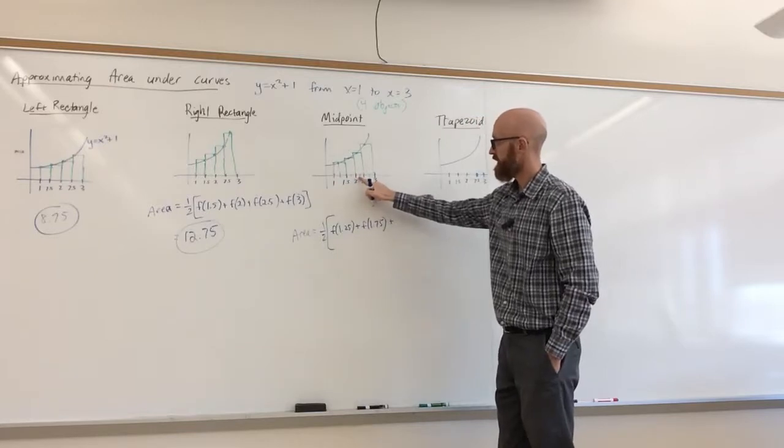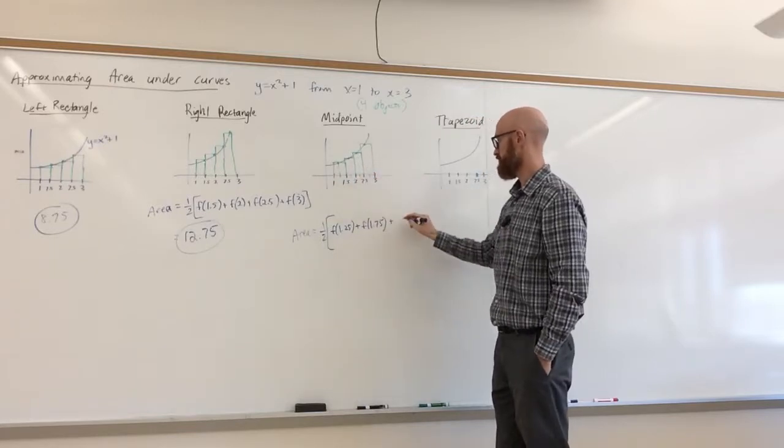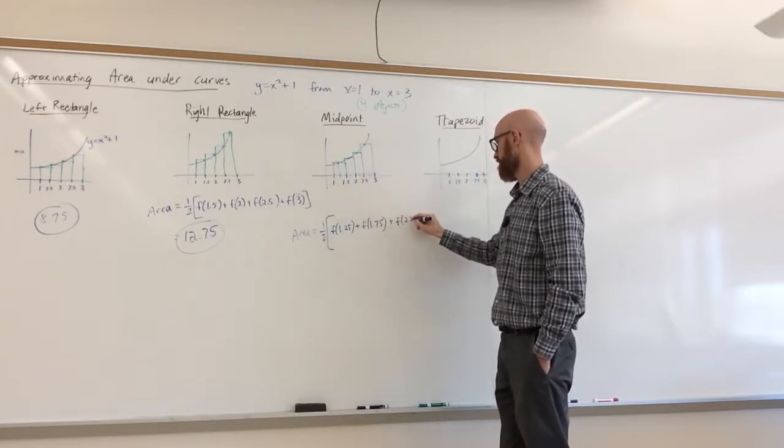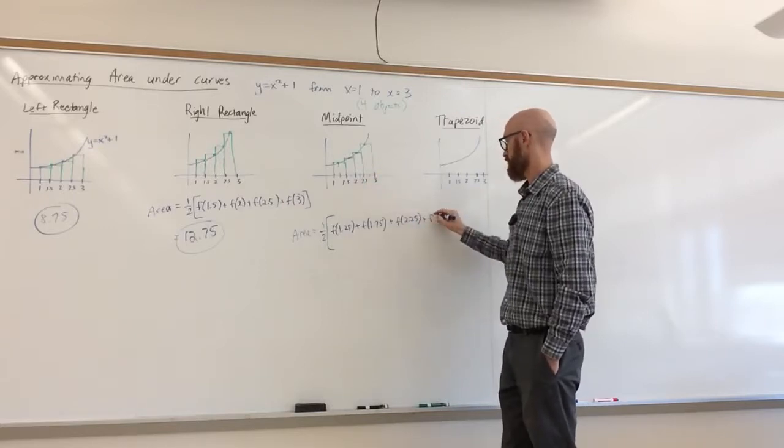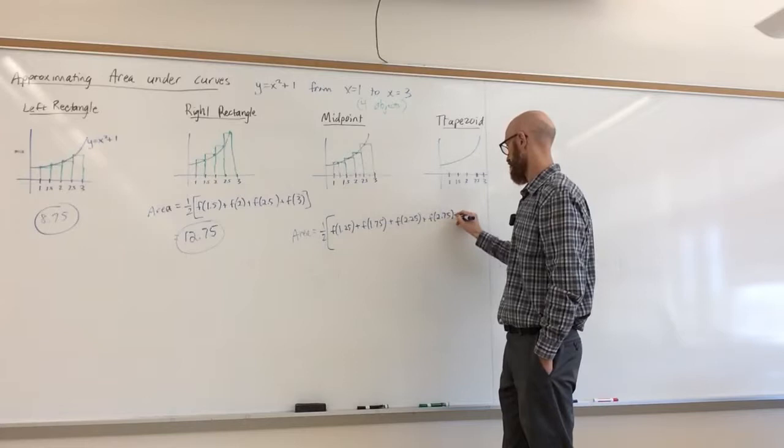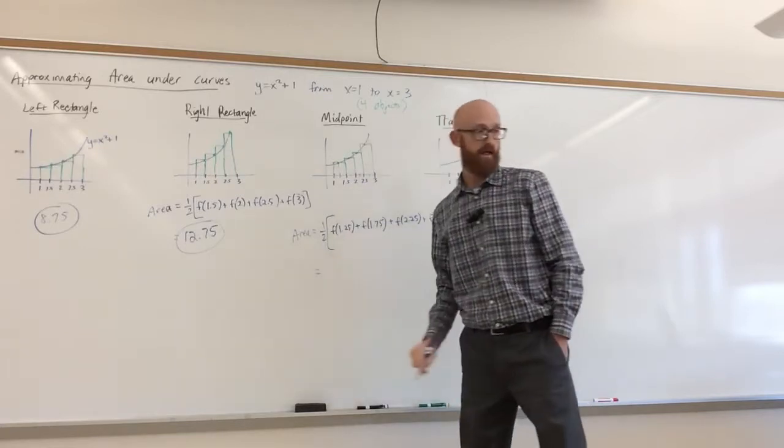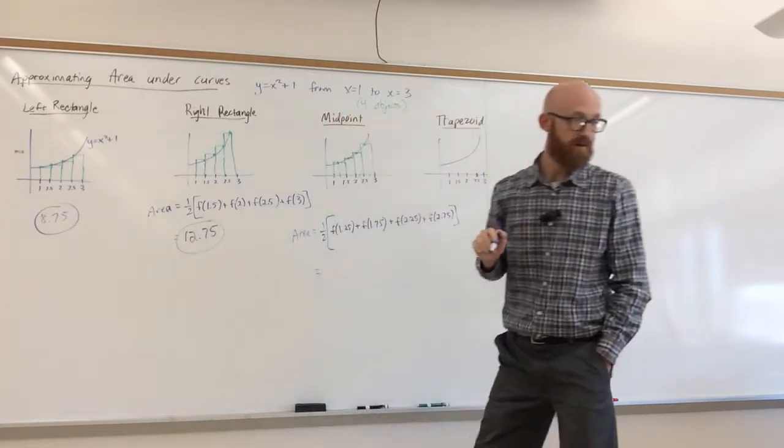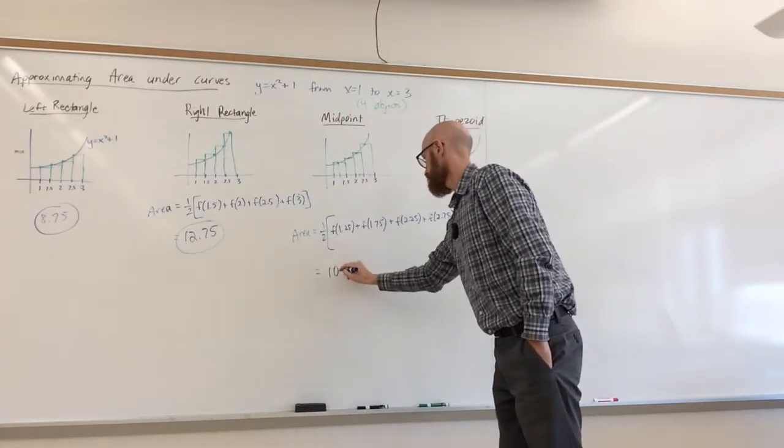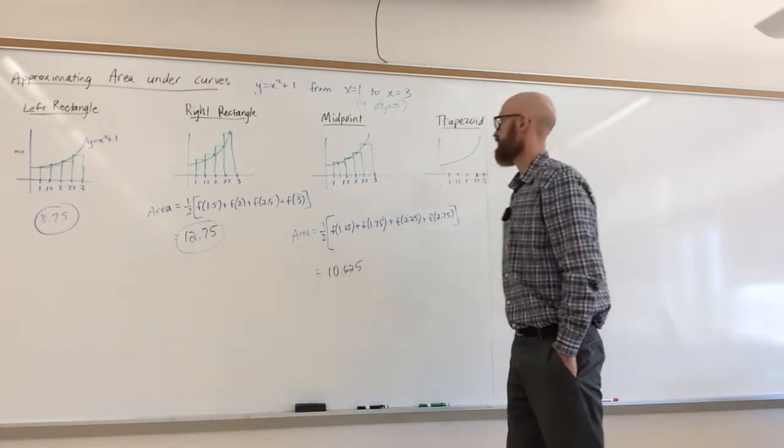And then between 2 and 2 and 1 half, we use this as the middle, which is 2 and 1 quarter. And then 2 and 1 half to 3, we use 2.75. And if you calculate that, you'll get somewhere in the middle of 8.75 and 12.75. And as long as I did this right, you'll get 10.625.